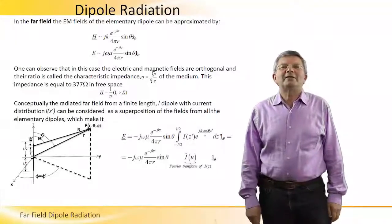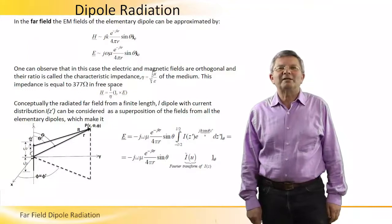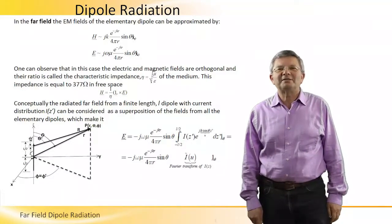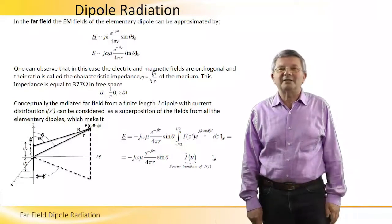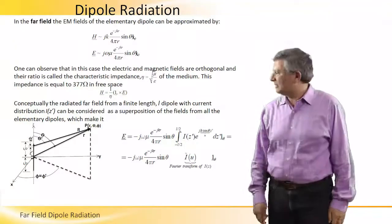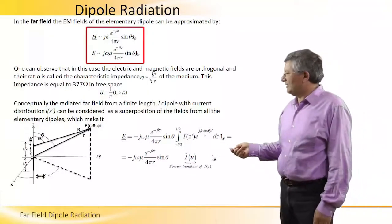Now let's go to the far field of the electromagnetic fields of the elementary dipole. In this case, the electric and magnetic fields can be approximated by those two expressions, H and E.